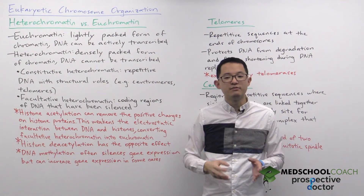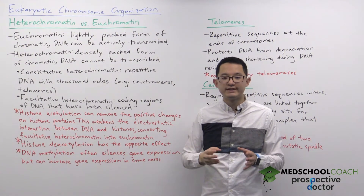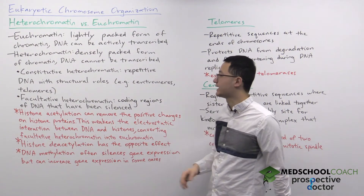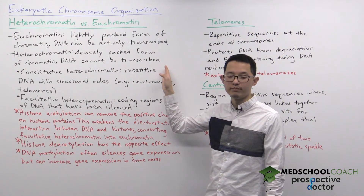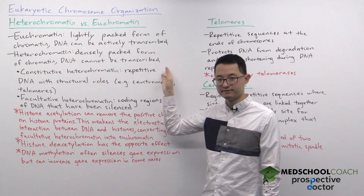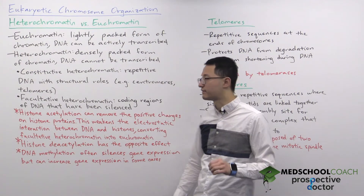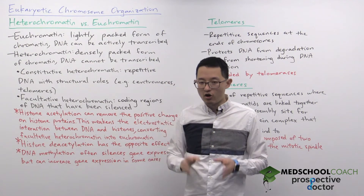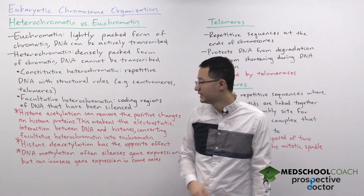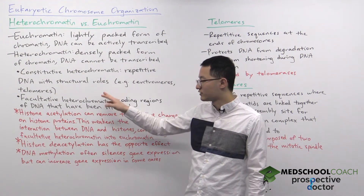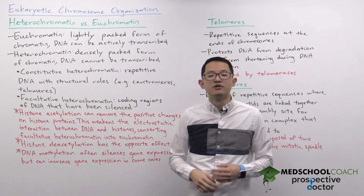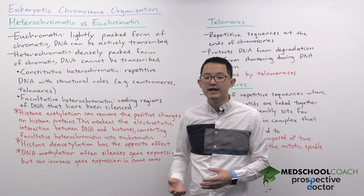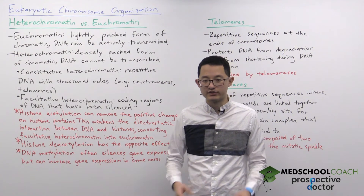In heterochromatin, the chromatin fibers are densely packed, so RNA polymerase cannot access the DNA and it cannot be transcribed. There are two different types of heterochromatin: constitutive heterochromatin, which is always in the heterochromatin state, and facultative heterochromatin, which can switch between heterochromatin and euchromatin depending on the conditions.